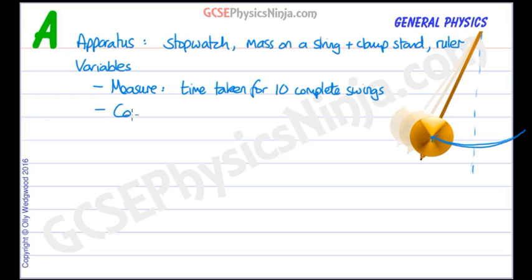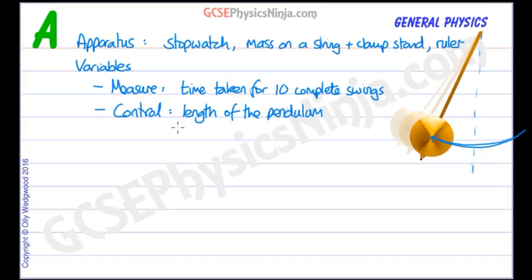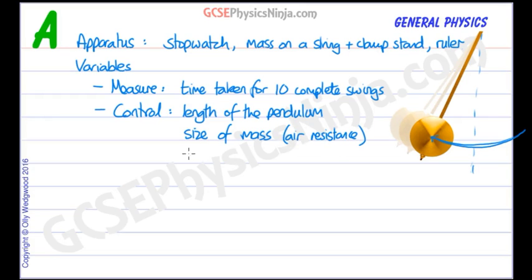What about some variables we need to control? If we were to do this experiment again, we must make sure that we have the same conditions. So we would want to control the length of the pendulum, as that has a direct effect on the period — so we'd keep that the same. We would also want to keep the mass the same size, because a bigger mass might change the air resistance, which could affect the period. We'd also want the same initial displacement from the centre line, measuring it to make sure it's the same distance each time.